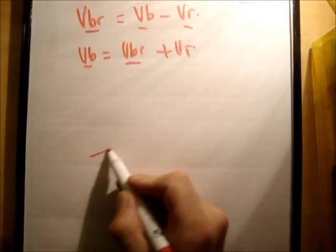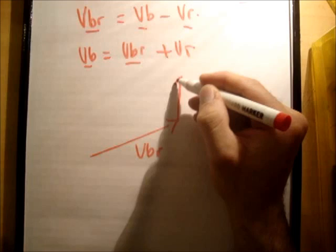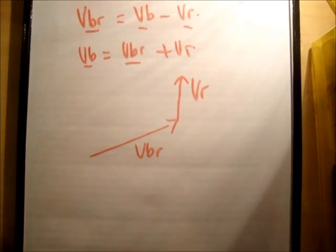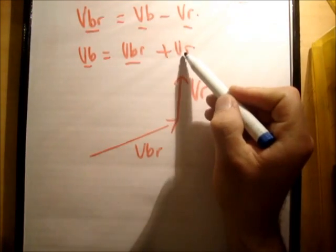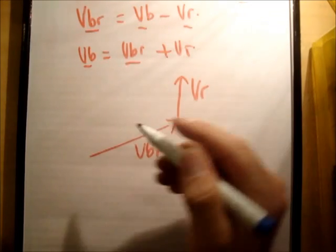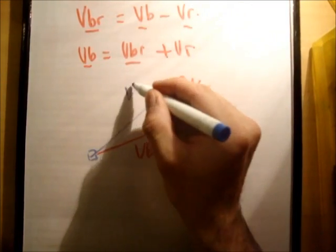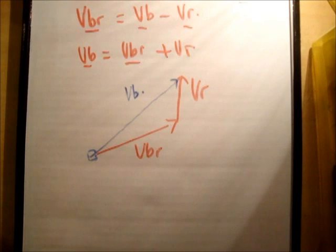So if I draw vbr like this, I draw vr like that. Then of course vb is from, you draw the tail of the second and the head of the first and you draw your resultant from the tail of the first to the head of the second. So it goes from here up to there and this is v-boat. Alright, so that makes sense. That makes perfect sense.